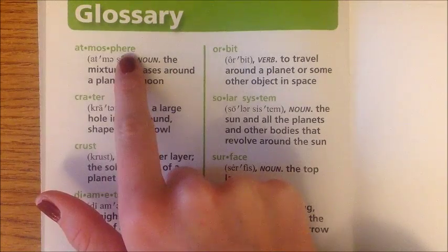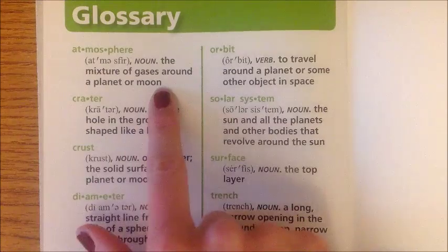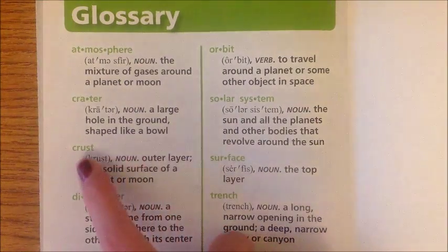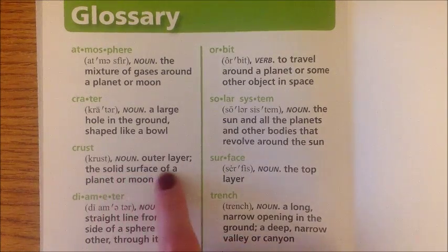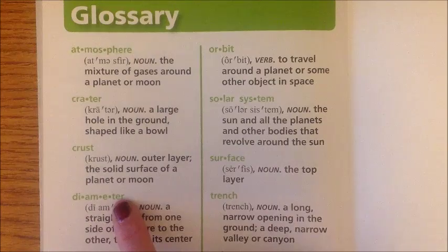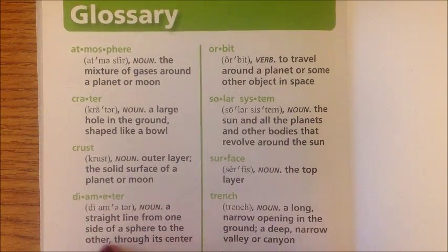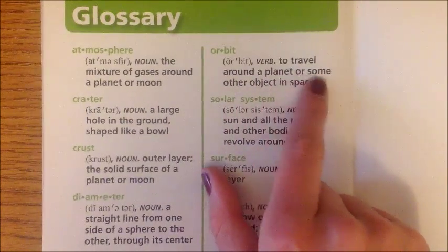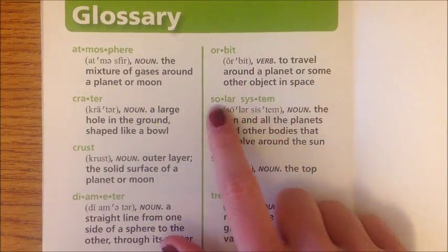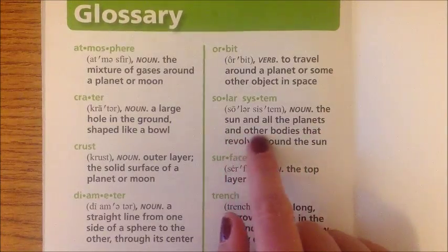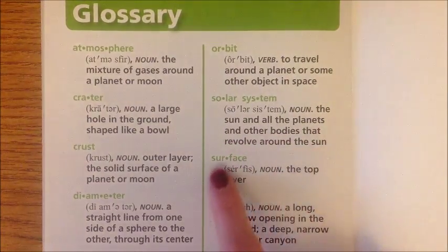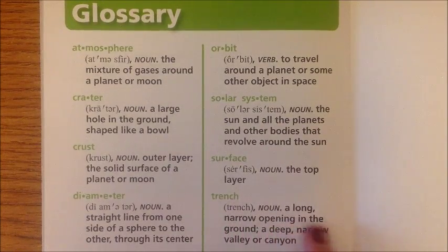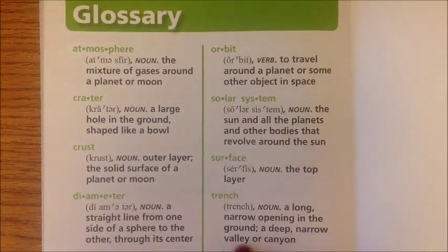Glossary. Atmosphere: the mixture of gases around a planet or moon. Crater: a large hole in the ground shaped like a bowl. Crust: the outer layer; the solid surface of a planet or moon. Diameter: a straight line from one side of a sphere to the other through its center. Orbit: to travel around a planet or some other object in space. Solar system: the sun and all the planets and other bodies that revolve around the sun. Surface: the top layer. Trench: a long narrow opening in the ground; a deep narrow valley or canyon.